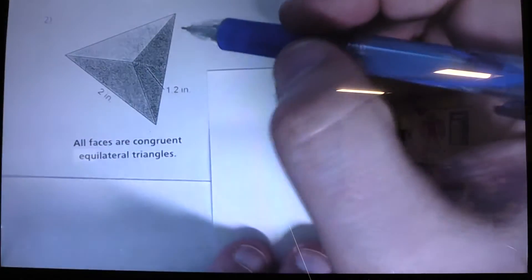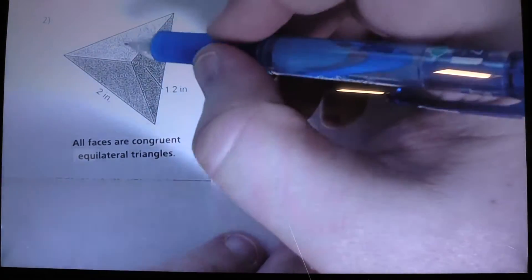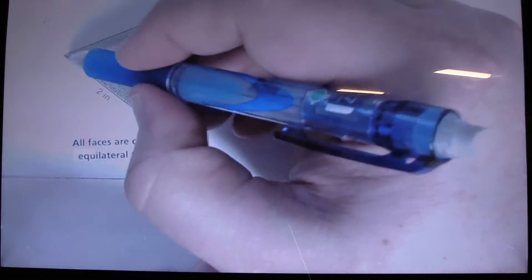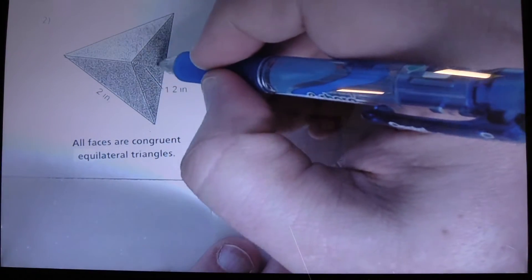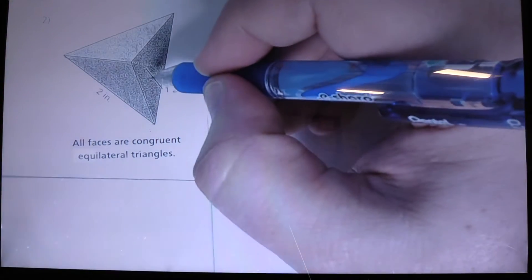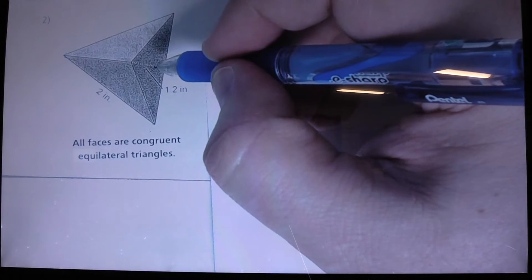Now, one thing I do want to point out, this is not a really good copy of this. Here we have one face that goes like that, here we have another face like that, and here we have a face with a dotted or broken line, and we have 1.2 inches pointing to it. That tells us the height of this particular triangle.